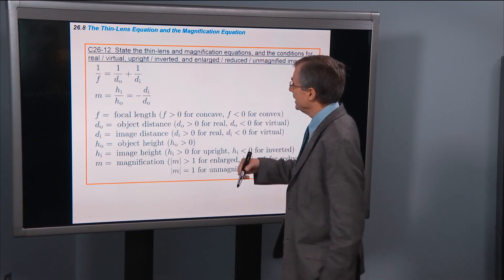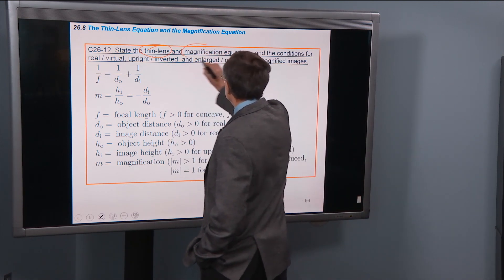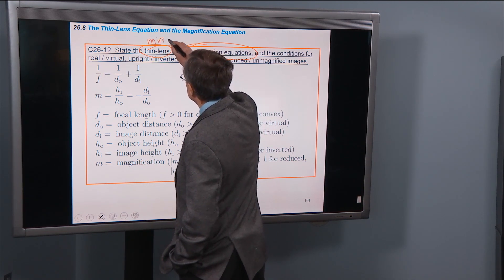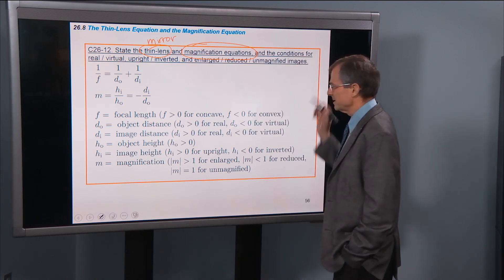State the thin lens and the magnification equations. So before I had mirror, and the conditions for real virtual, all the rest of this is the same.